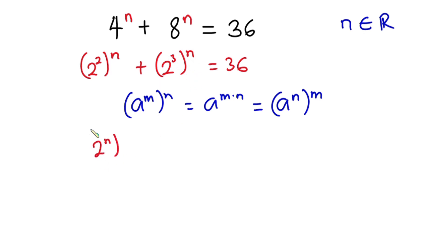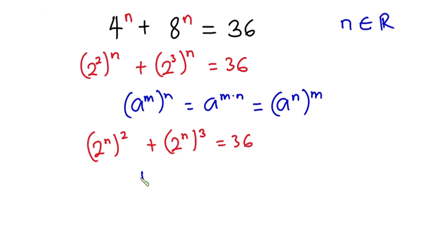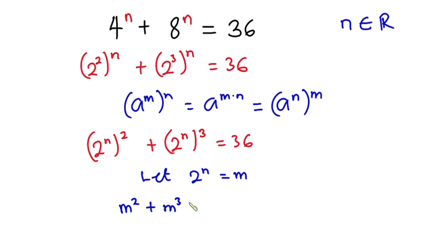So we have 2 to the power n, to the power 2, plus 2 to the power n, to the power 3, and this is equal to 36. Now let's let 2 to the power n equal m. In place of 2 to the power n we put m, so the equation becomes m squared plus m cubed is equal to 36.